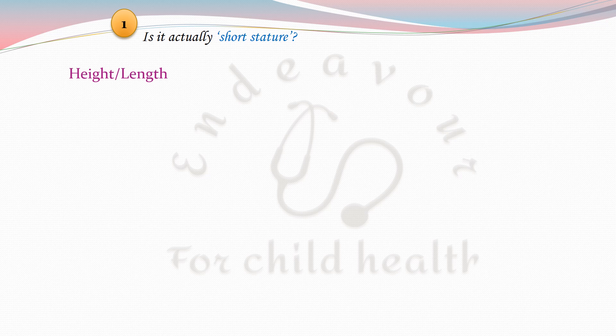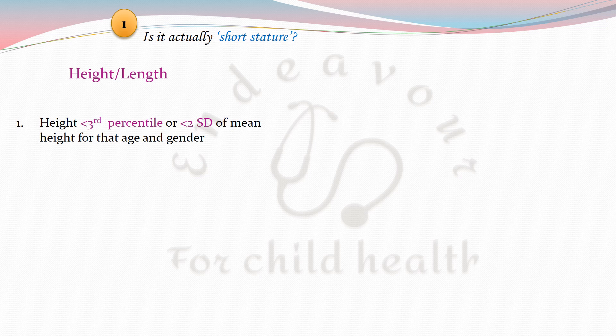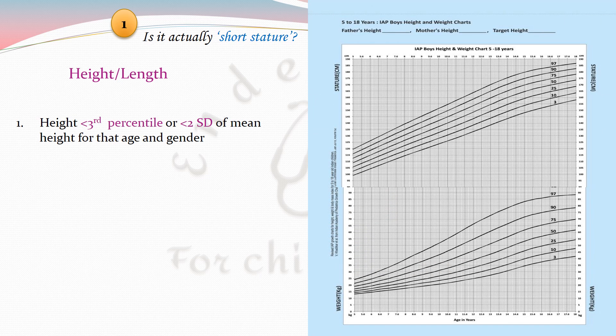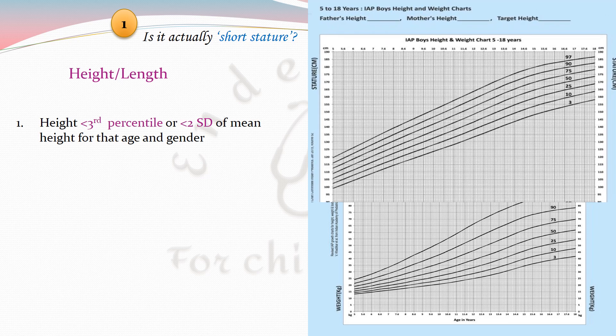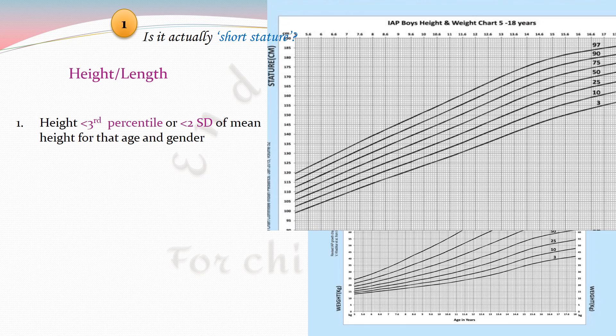The first parameter is height less than the third percentile or two standard deviations of mean height for that age and gender, as already discussed. This is a growth chart for boys 5 to 18 years of age. Suppose a boy of 7 years of age has a height of around 108 centimetres — this height is less than the third percentile, so this boy will be considered short statured.